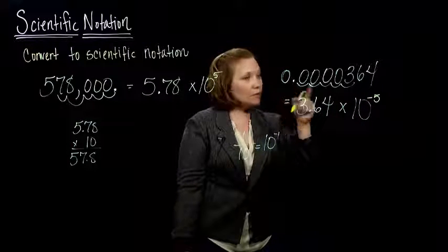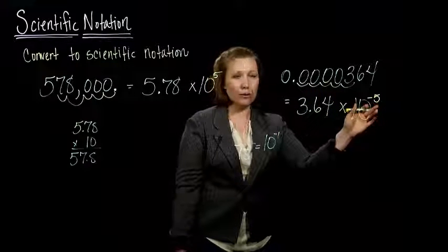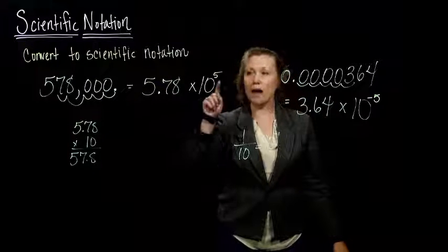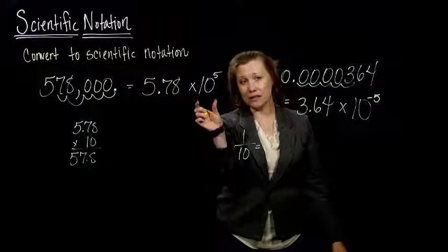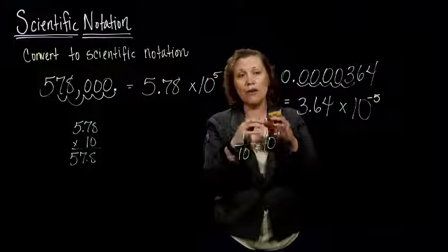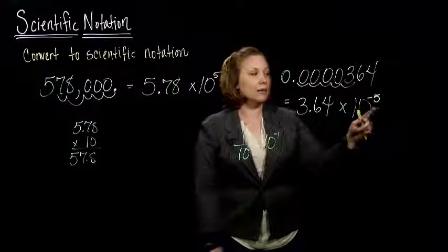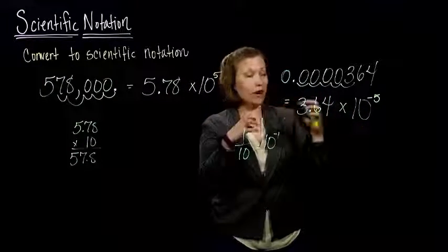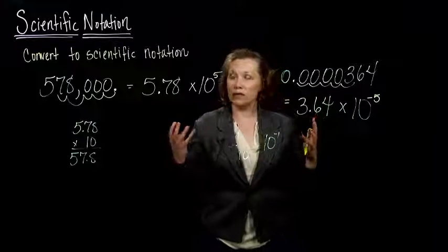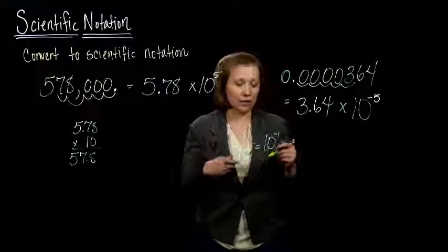So if you have a small number and we're writing it in scientific notation, your power should be negative. If you have a big number, your power should be positive. Because positive powers are going to, when you actually put this in your calculator and multiply it out, multiplying by positive powers of 10 will make your number grow really big. Multiplying by negative powers of 10 will make it grow really small because you're actually dividing by 10 there. So that's how we can convert from standard notation to scientific notation.